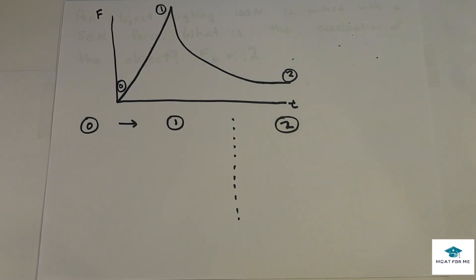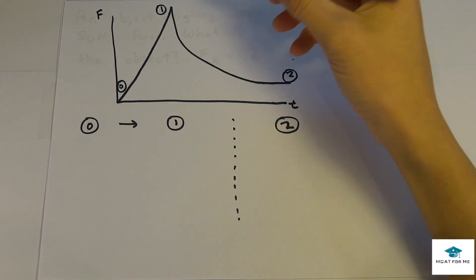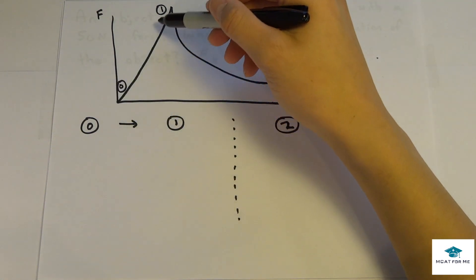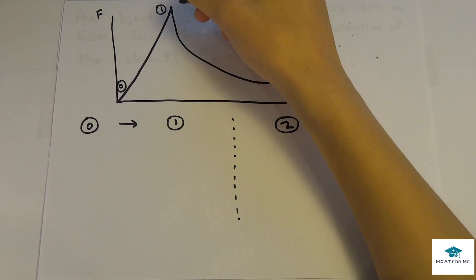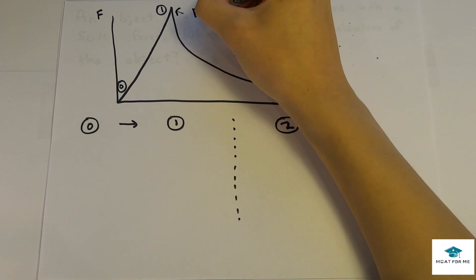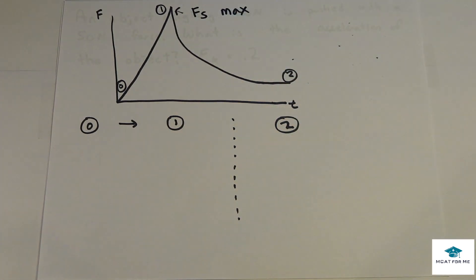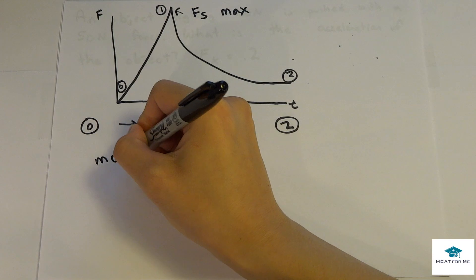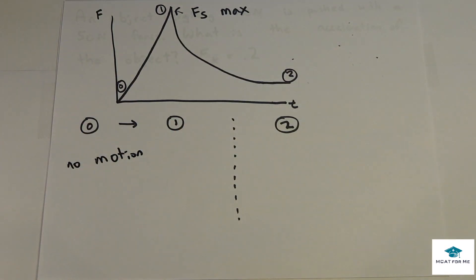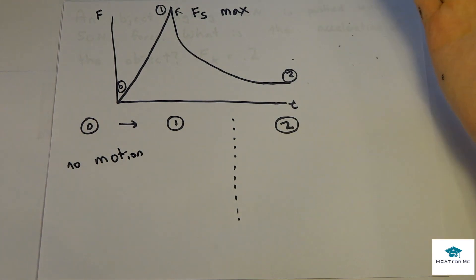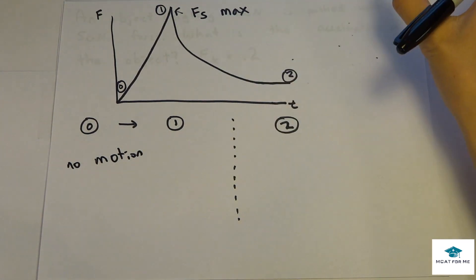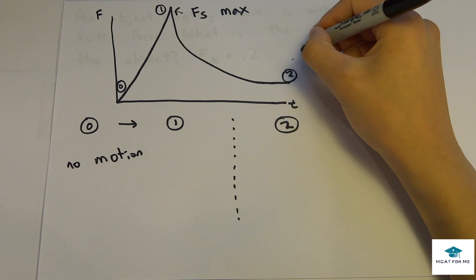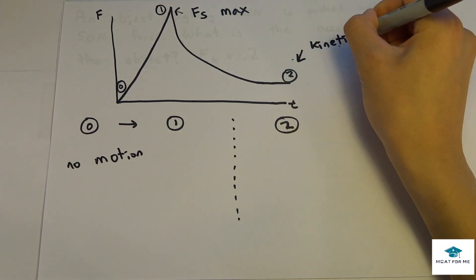Looking at a graph of frictional force versus time, the frictional force starts from zero and slowly increases up to a peak, which represents the maximum static friction (Fs max). From zero to point one on the graph, the object is not in motion — we're pushing on it but it's pushing back and we can't move it, so no sliding is occurring. At point two on the graph, it transitions to kinetic friction.